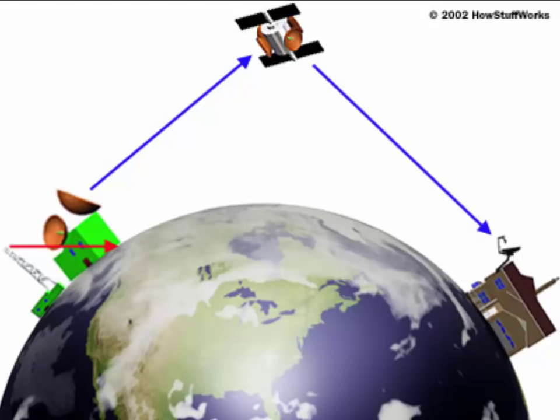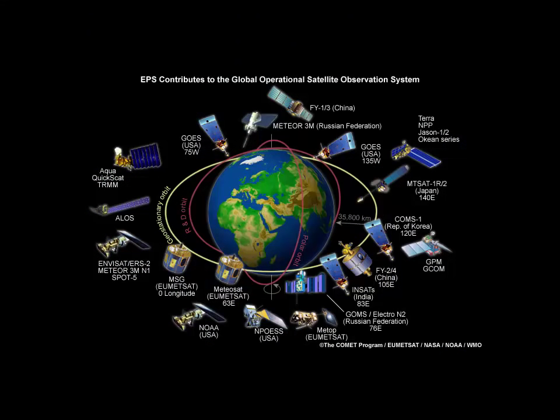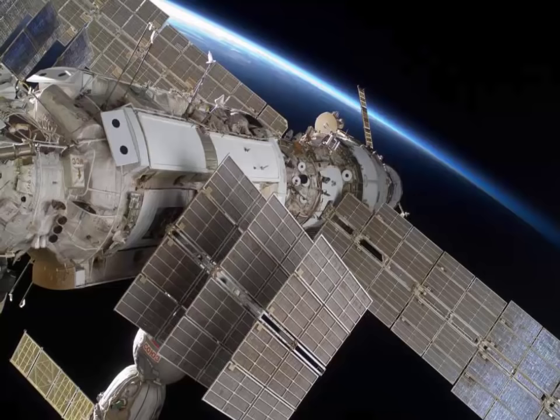Satellites orbit Earth at different heights, different speeds, and along different paths. The two most common types of orbit are geostationary and polar. A geostationary satellite travels from west to east over the equator, moving in the same direction and at the same rate Earth is spinning — from Earth, a geostationary satellite looks like it is standing still since it is always above the same location. Polar orbiting satellites travel in a north-south direction from pole to pole.